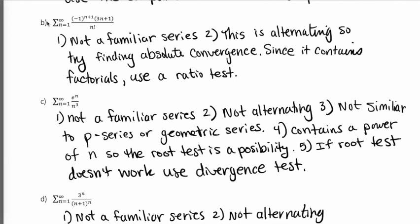In the second strategy example, step 1 shows it's not a familiar series. But at step 2, we see it is an alternating series. So we want to check for absolute convergence by removing the (-1)^n factor. We can also use the ratio test here because there are factorials. That is where I would start on this one.